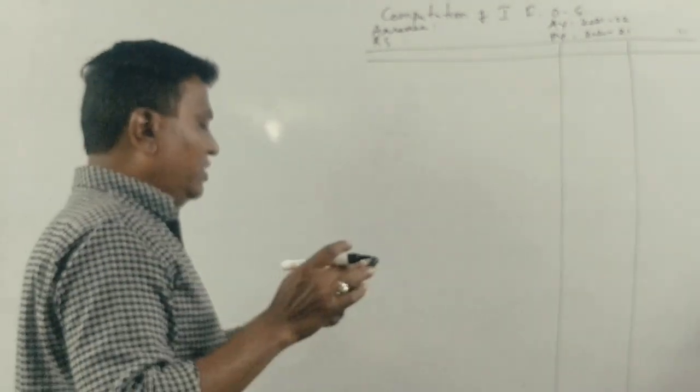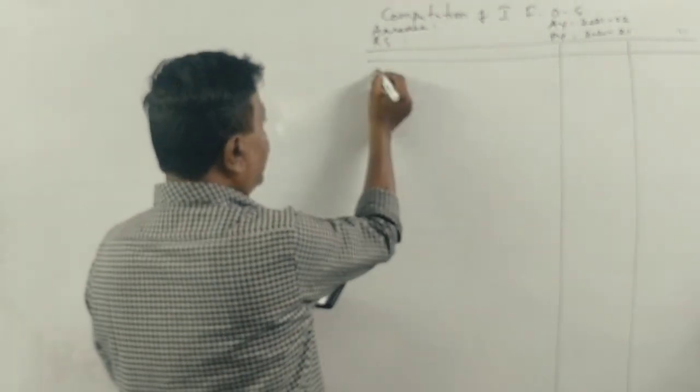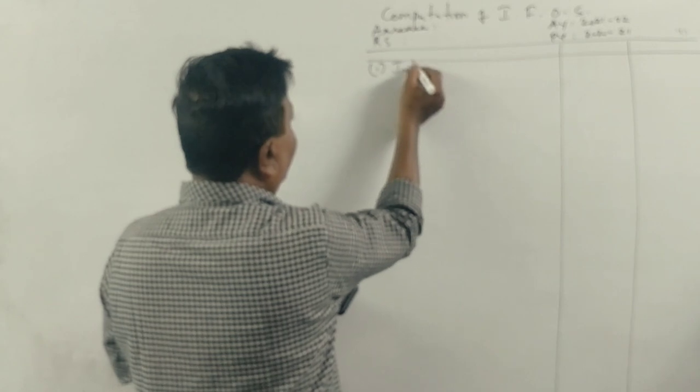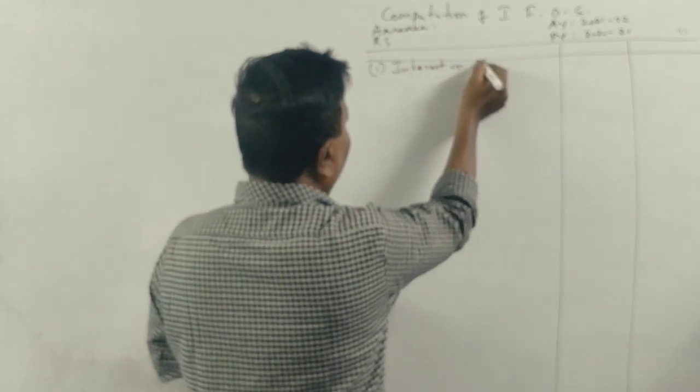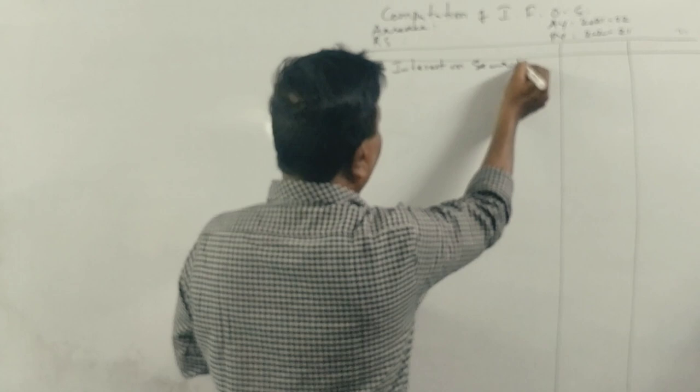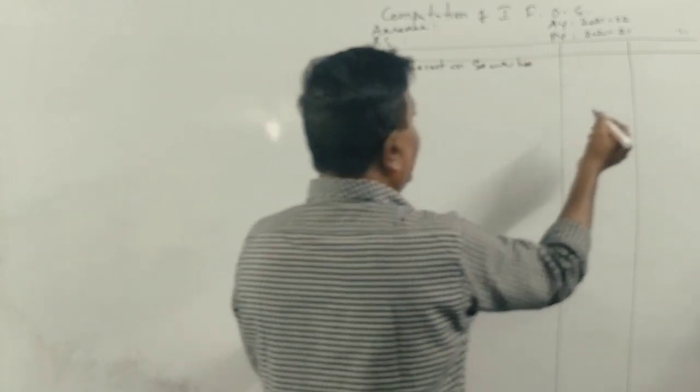First point in this case, interest on securities. It is fully taxable. So interest on securities Rs. 6,000, write it directly in the outer column.